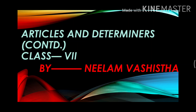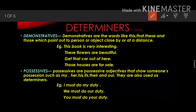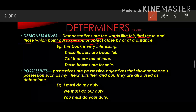Let's start with the first kind of determiners, and that is demonstratives. Demonstratives are the words like this, that, these and those, which point out to a person or object close by or at a distance. Examples: this book is very interesting, these flowers are beautiful, get that car out of here, those houses are for sale. Here the words this, these, that and those are demonstrative determiners.